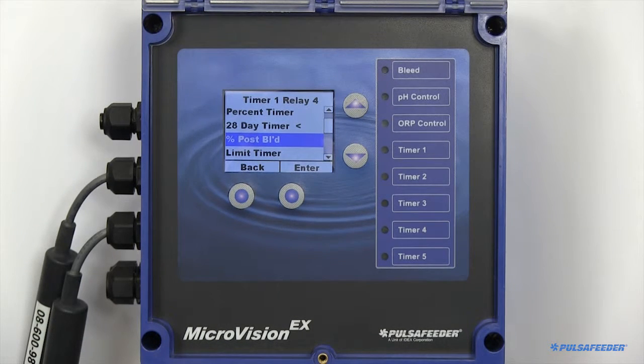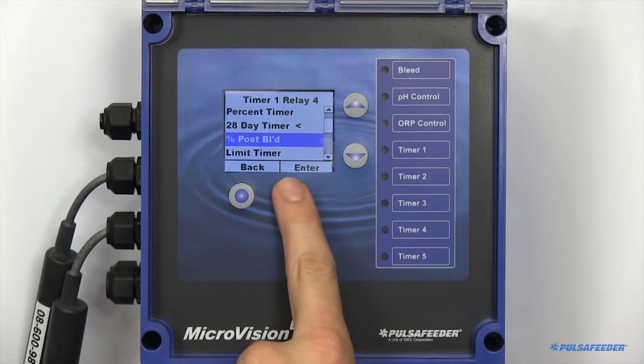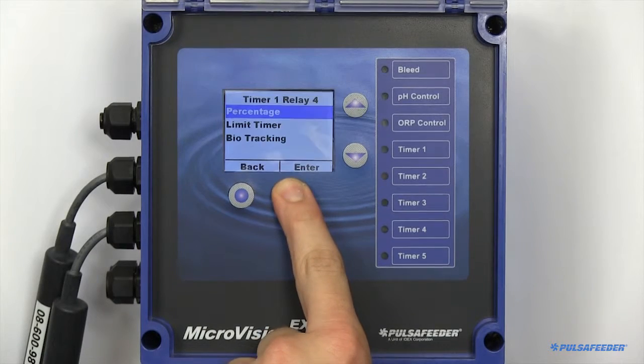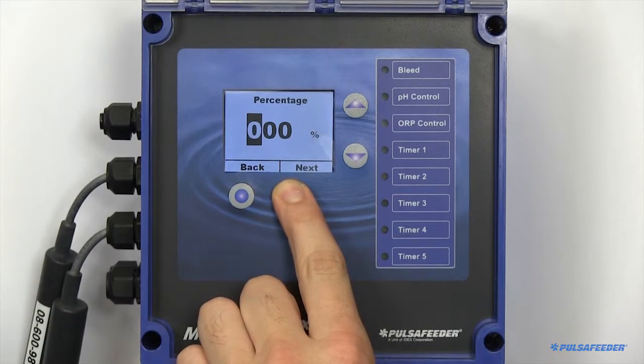Percent Postbleed keeps track of the time the bleed relay is turned on. When that bleed shuts off, it will then bleed for the specified percentage.